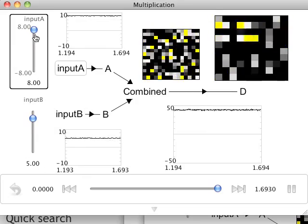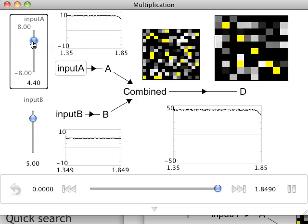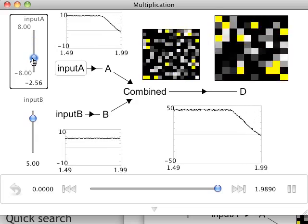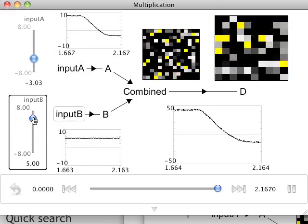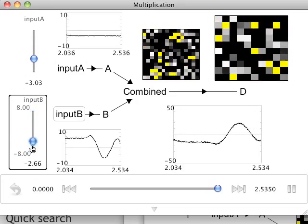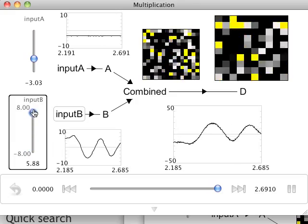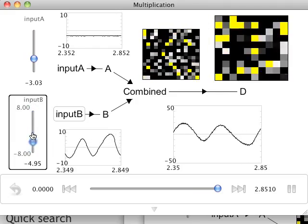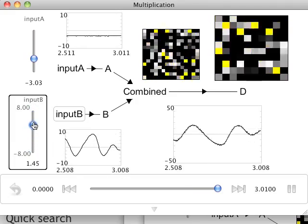We can convince ourselves that this is indeed computing a product by setting the input in A to a negative value and moving the input in B up and down rapidly. We would expect population D to have a function over time which looks like the inverse of that in population B.